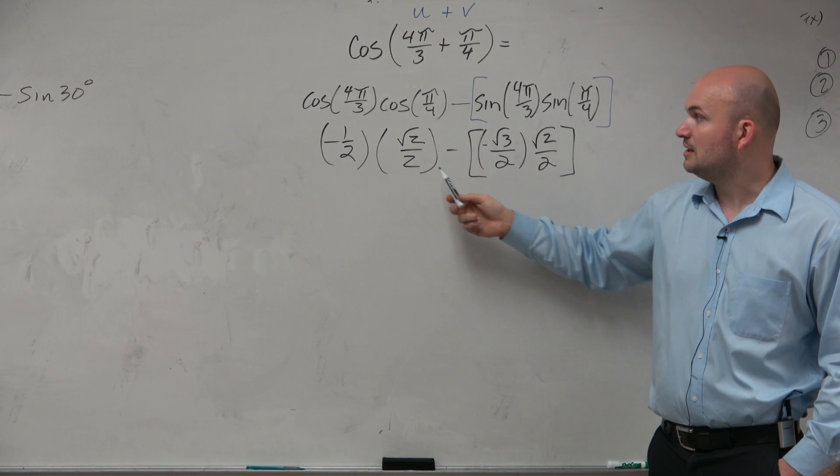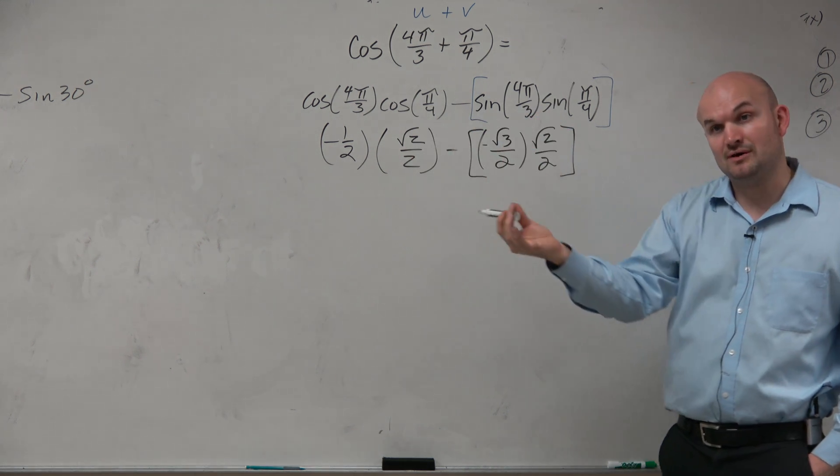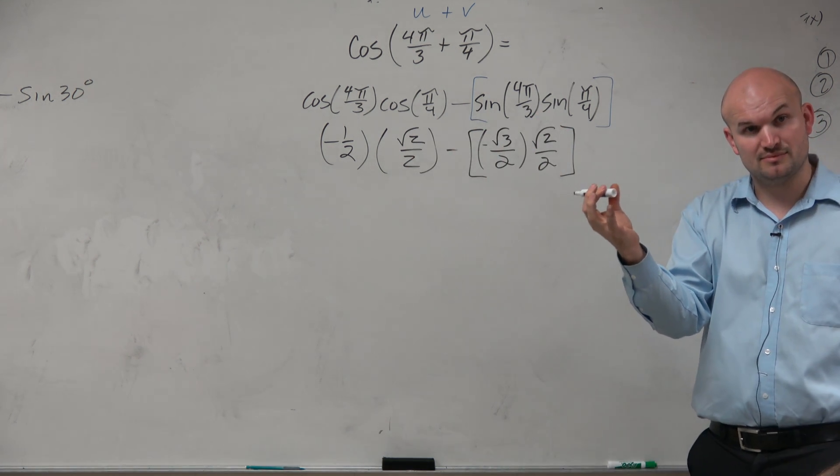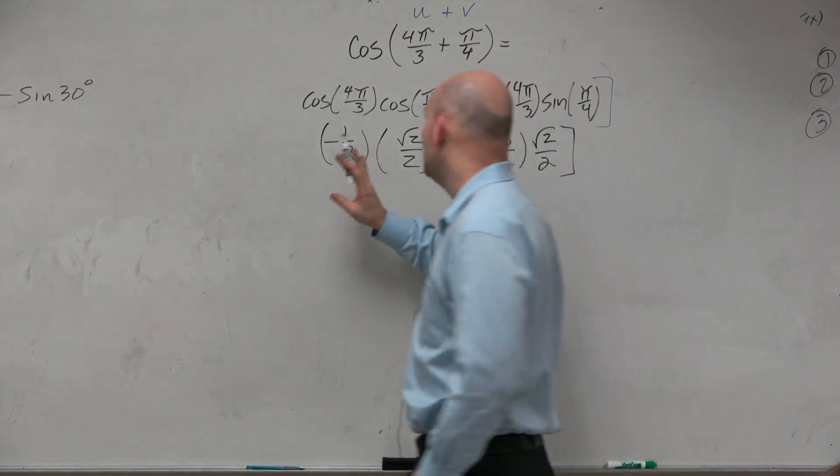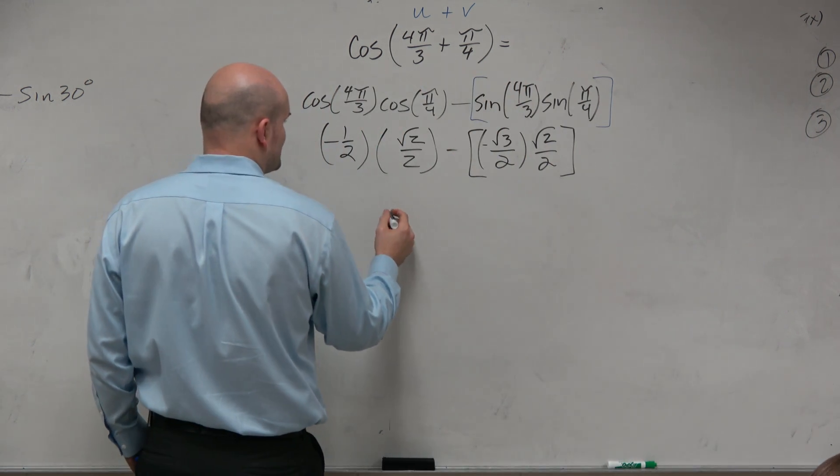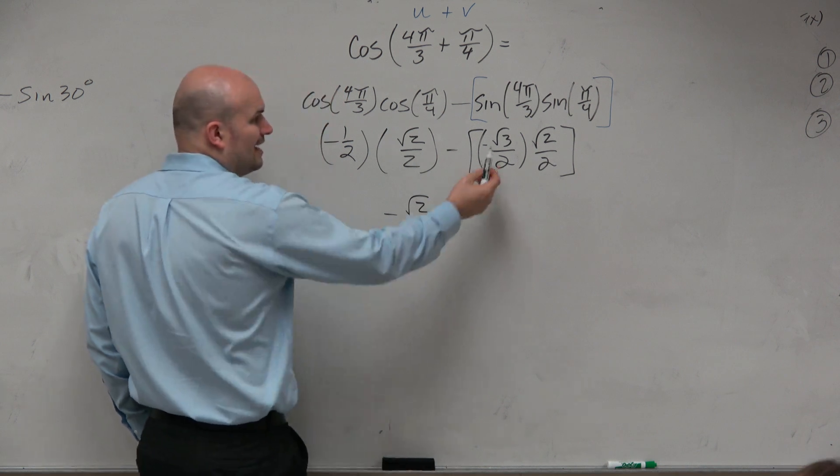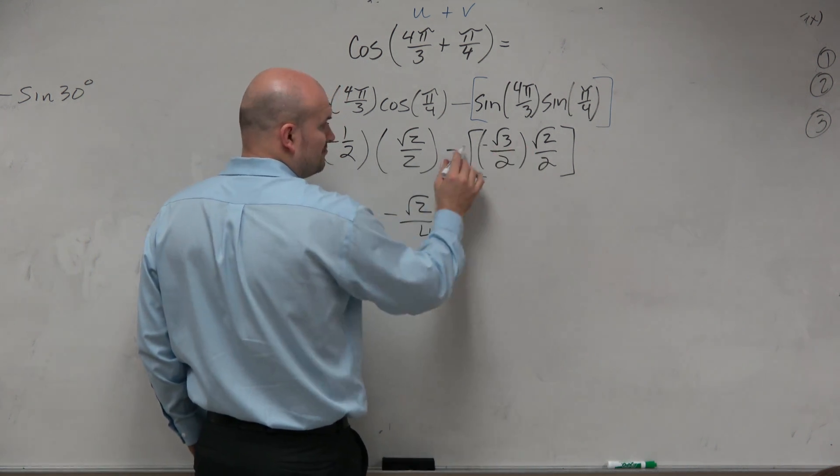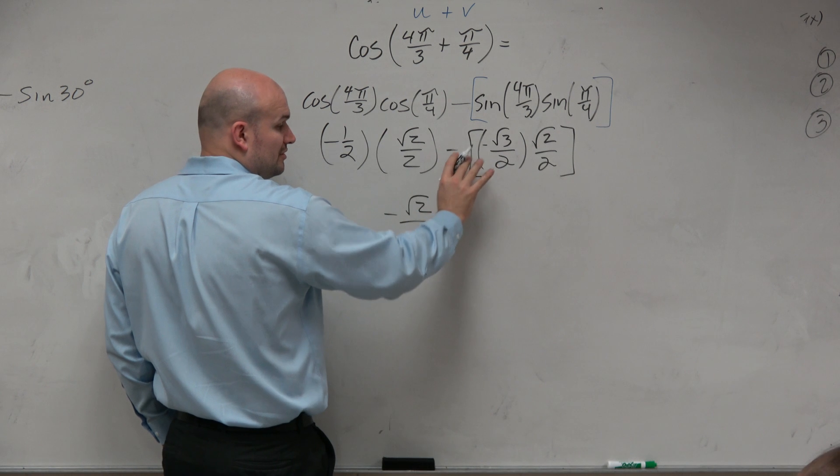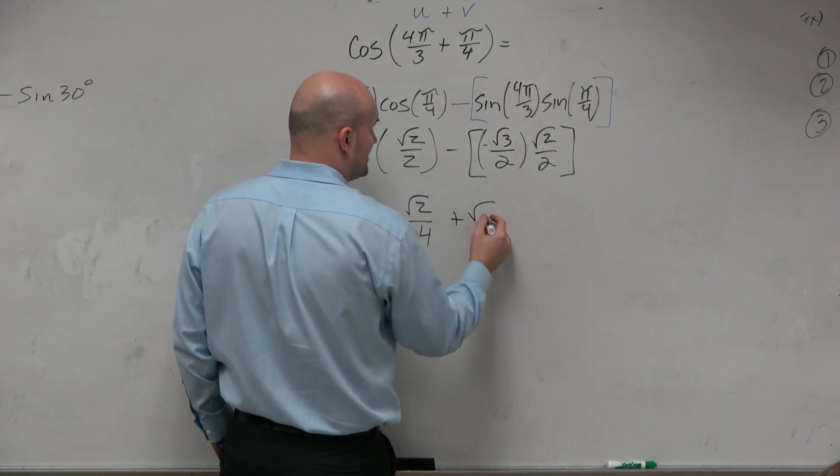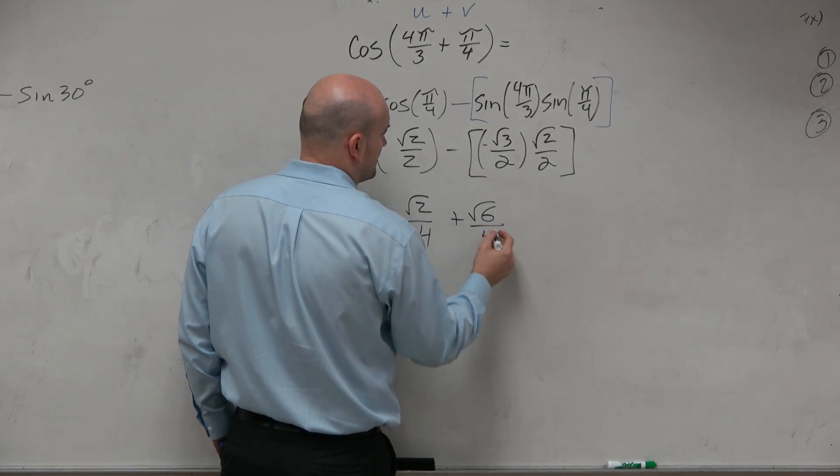You can't multiply a number outside of a radical that's not under the same index inside of a radical. But if I go ahead and multiply this straight across, I get negative √2/4. And then this is basically minus a negative, right? So we could really rewrite that as positive √6/4.